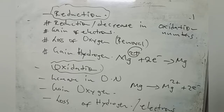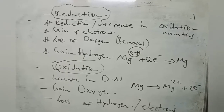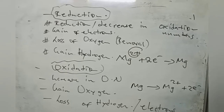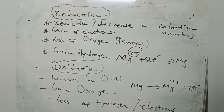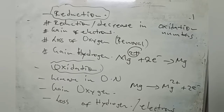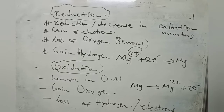So reduction and oxidation combined in one reaction gives us what is called a redox reaction. A redox reaction is made up of what we call half equations, which I'll now show you.